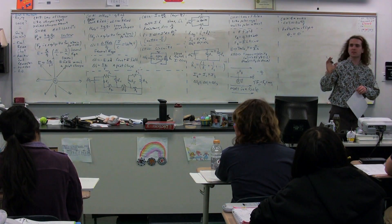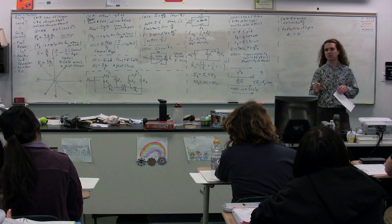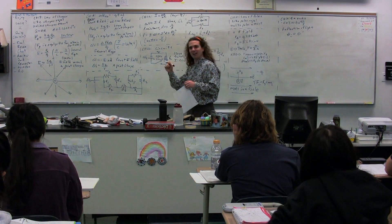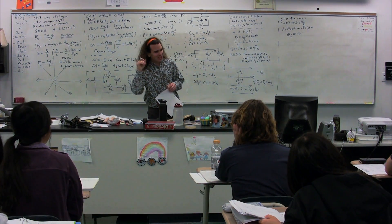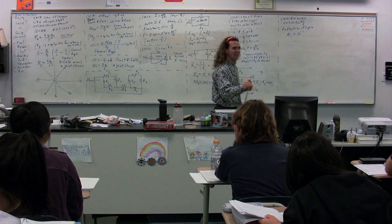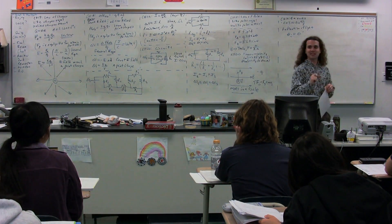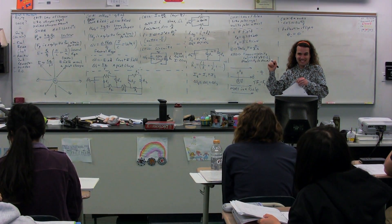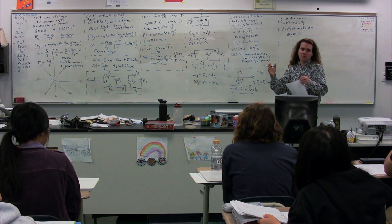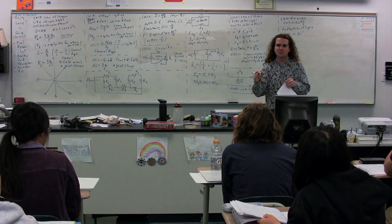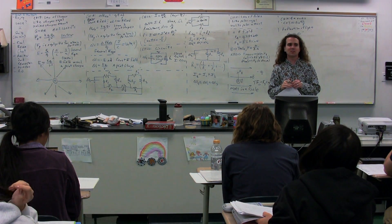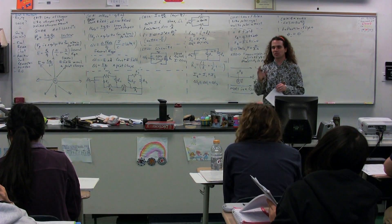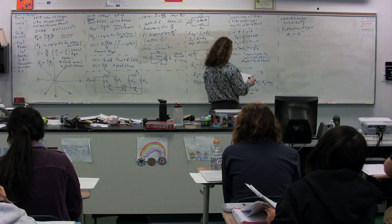All of these angles in chapters 14 through 16 are always measured relative to the normal. The incident angle, the reflected angle, the refracted angle, the critical angle — all of these angles from chapters 14 through 16 are always measured relative to the normal. Who needs to remember that?